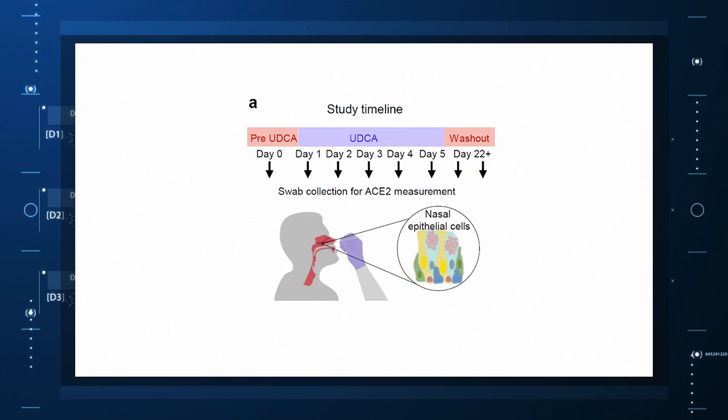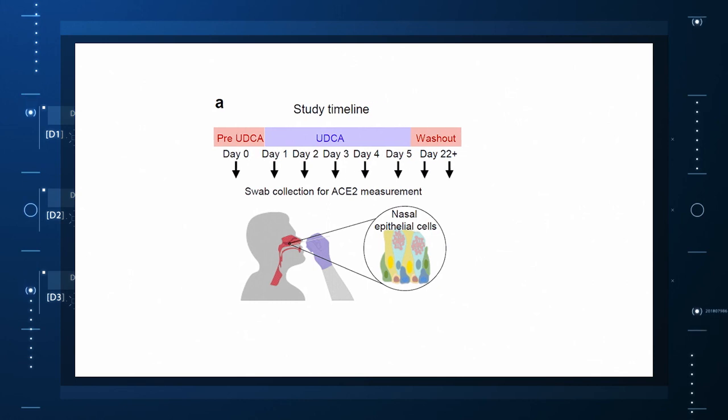They didn't stop there. Eight human volunteers were recruited to take UDCA for five days. ACE2 levels in the nasal passages went down over the course of treatment. They confirmed those results from a proteomics data set with several hundred people who had received UDCA for clinical reasons. Those so treated also had lower ACE2 levels.